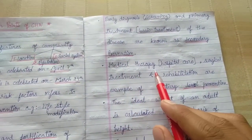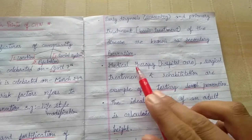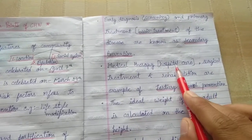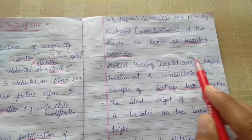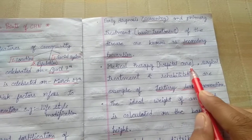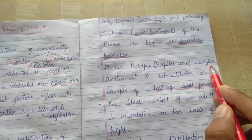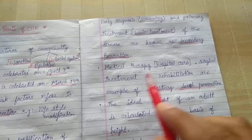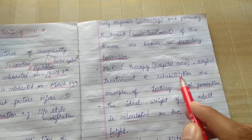Medical therapy in hospitals — that is, hospital care — refers to tertiary prevention. This includes all medical therapies, treatments, and surgeries provided in a hospital setting.